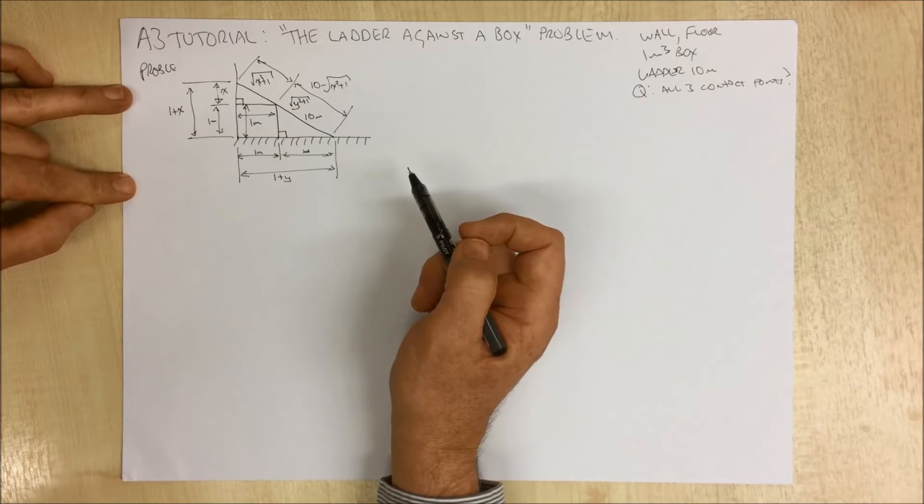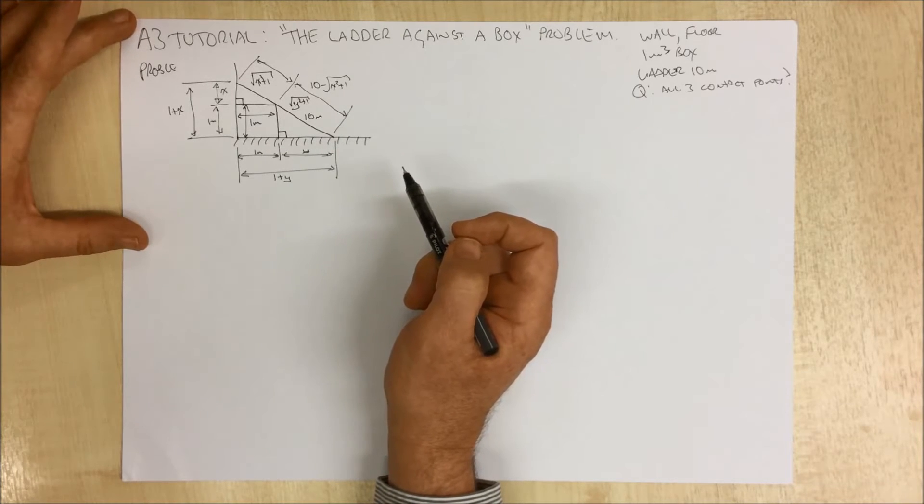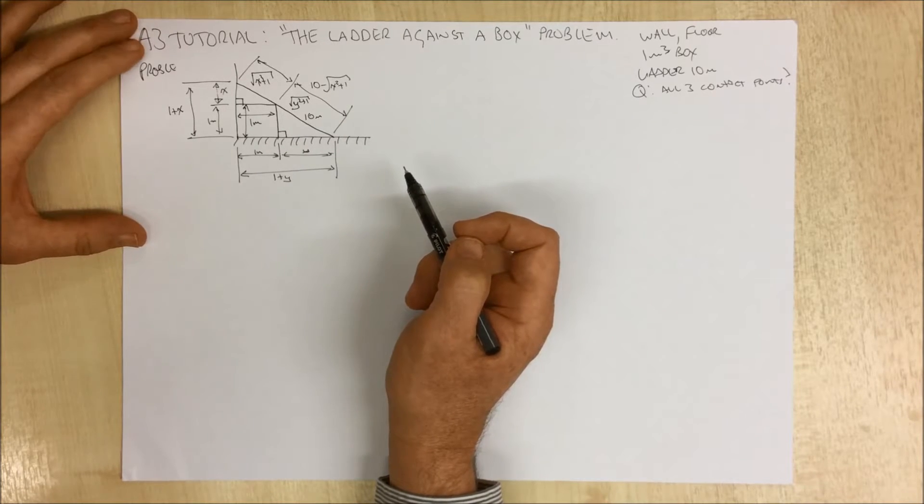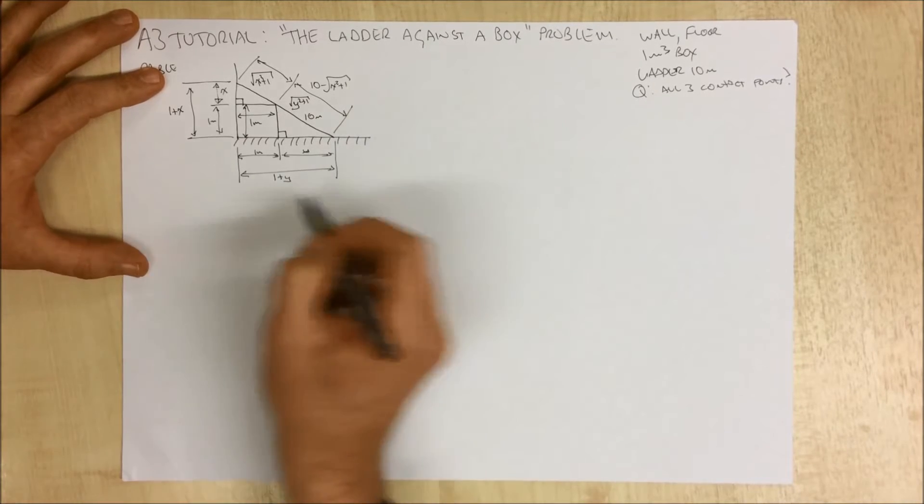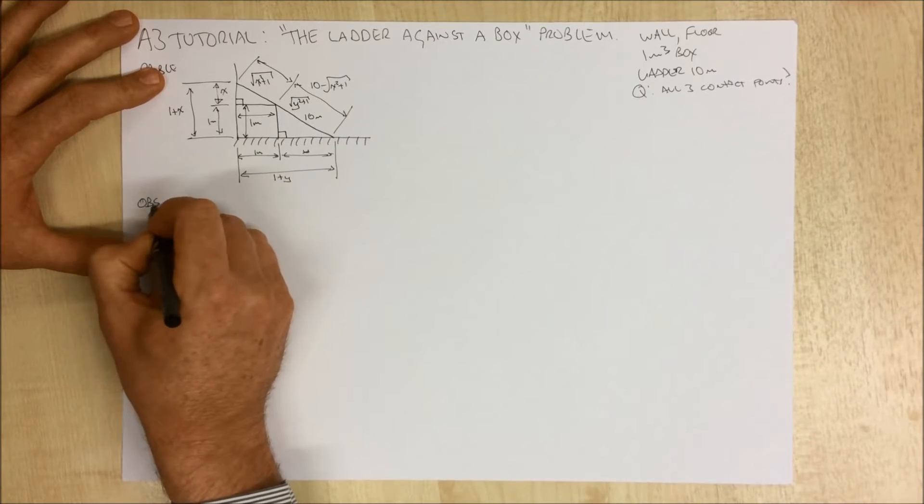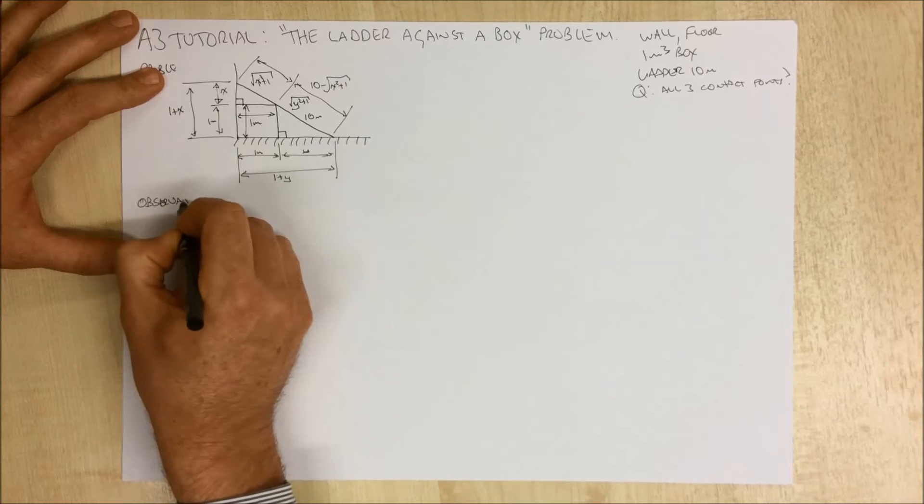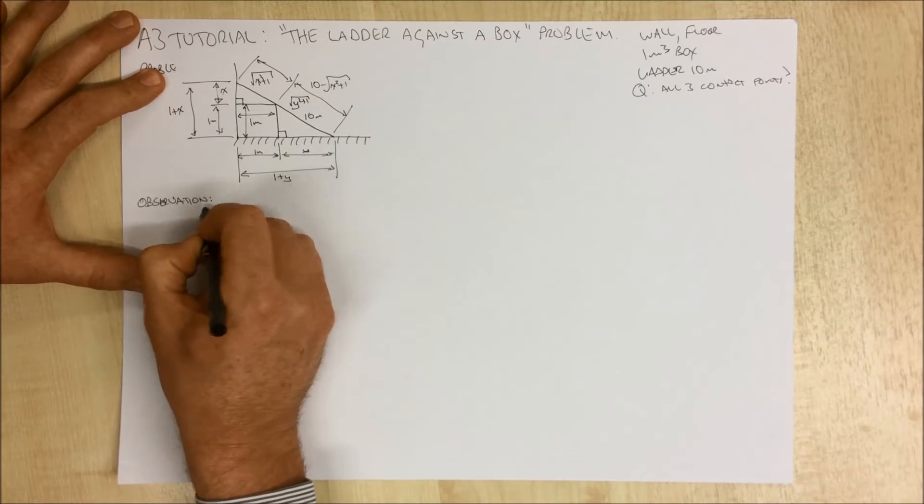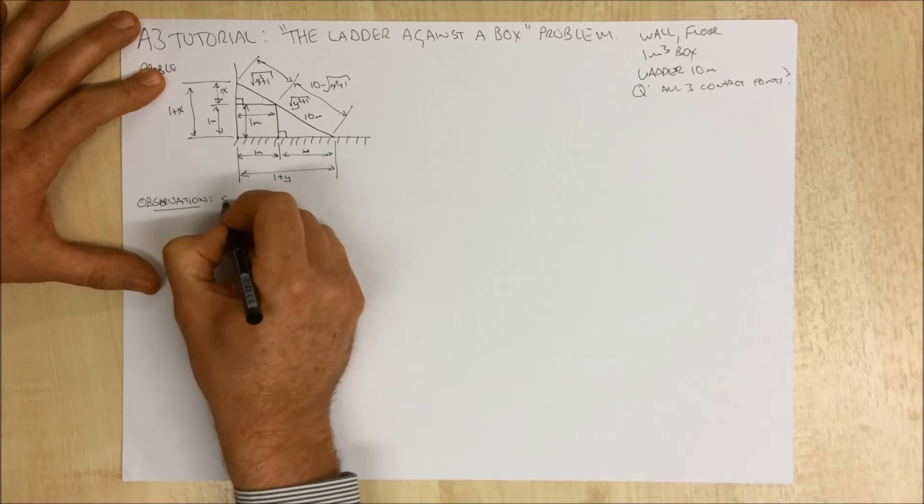So when we look at this, we can hopefully see something here. And that is an observation. And that observation is that this is a similar triangles problem.